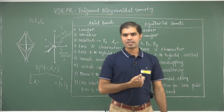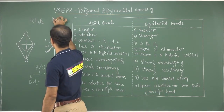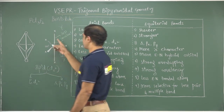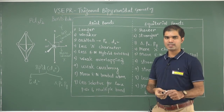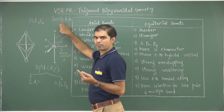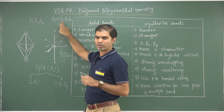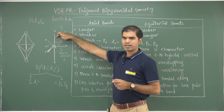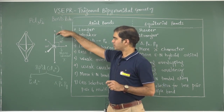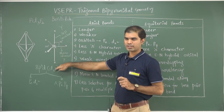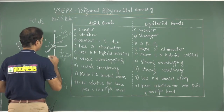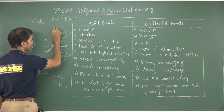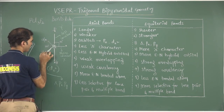The more electronegative atom will choose the axial position. This is given by Bent's rule. Bent's rule states that a more electronegative atom will choose that hybrid orbital which has less S character. Within axial and equatorial, axial has less S character — therefore more electronegative atoms selectively go to the axial position. So for PCl₃F₂, fluorine is more electronegative, therefore fluorine takes the axial position and chlorine takes the equatorial position.